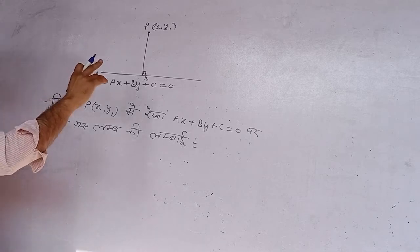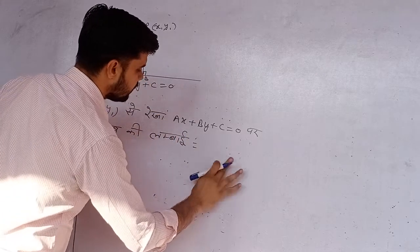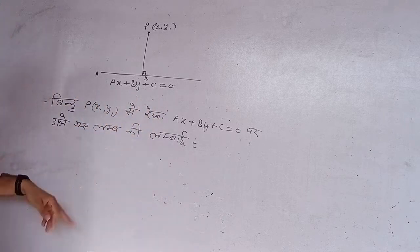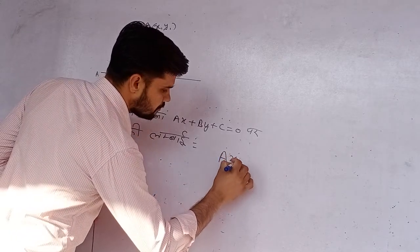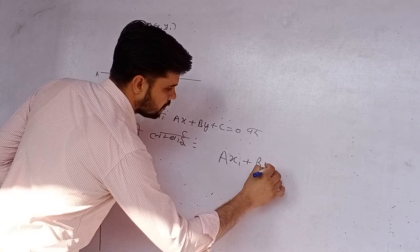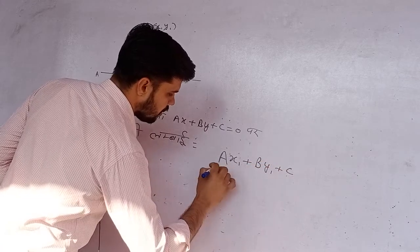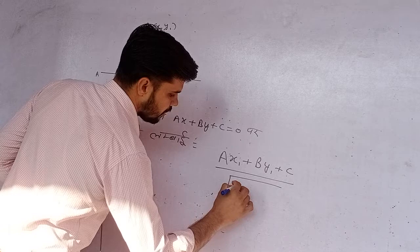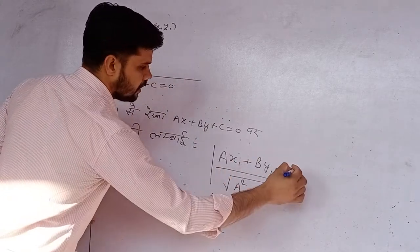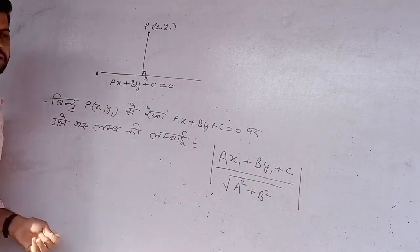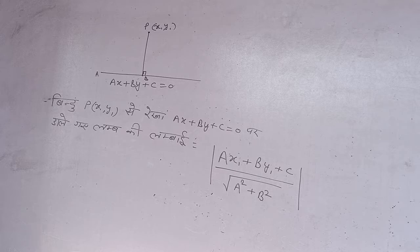इस बिंदू से इस रेखा पर डाले गए लंब की लंबाई क्या आएगी? इसका सुत्र होता है: ऊपर जो रेखा का समीकरण दे रखा है, उसमें हम X और Y की जगह यह बिंदू रख देंगे। X1, Y1 — इसका सुत्र हो जाएगा |AX1 + BY1 + C| ÷ √(A² + B²)। दूरी ऋणात्मक नहीं होती, इसलिए हम इसका मापांक ले लेंगे।